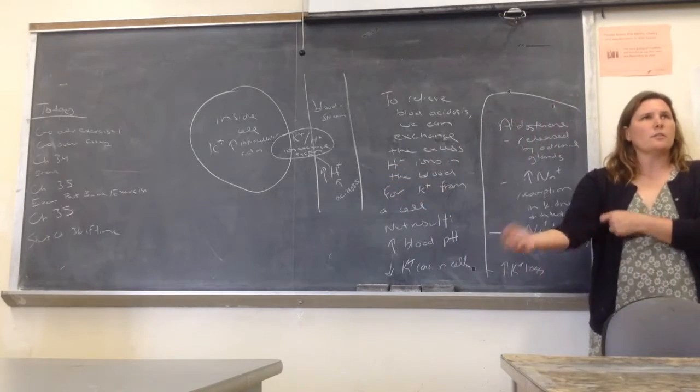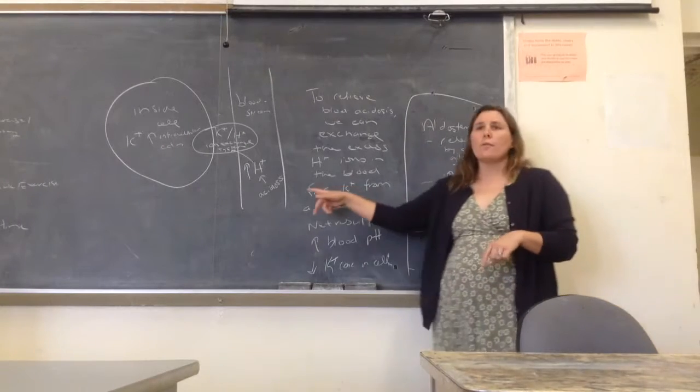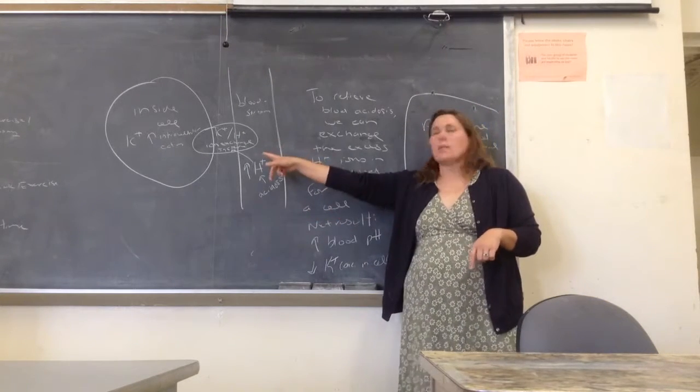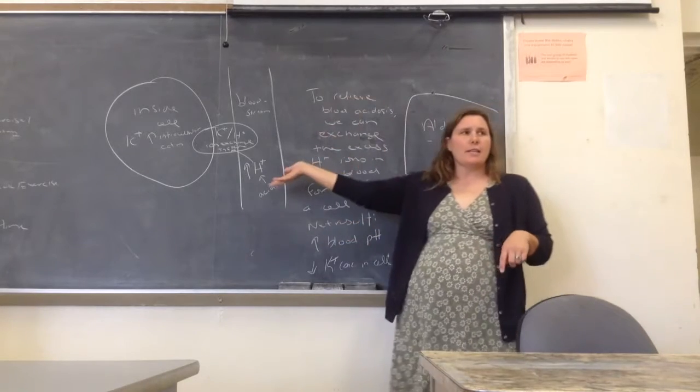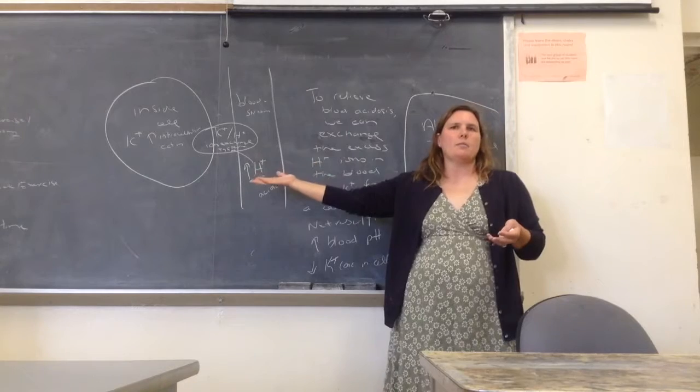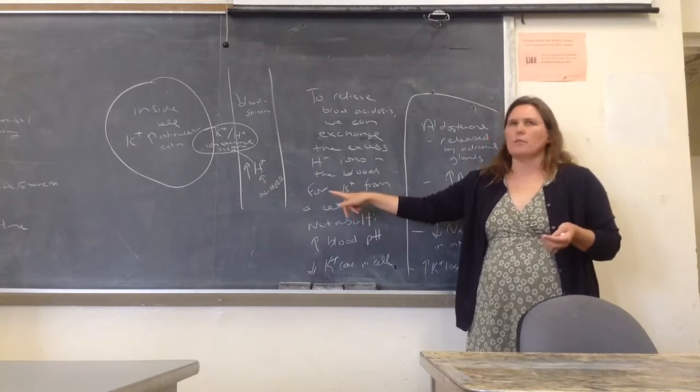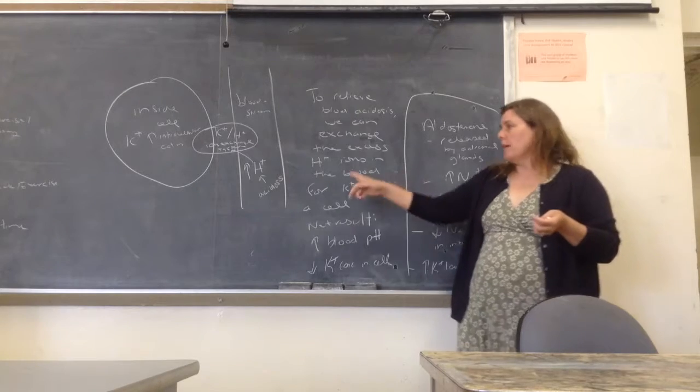If we're in acidosis, acidosis is a crisis for our system, it's not a good thing. One of the ways we can relieve that is by using this potassium-hydrogen exchange system to put hydrogen into the cell, and since we know we have just an abundance of potassium inside the cell, send potassium back into the blood. It doesn't affect the charge, but it will affect the pH. Those things are related, but they're not the same.